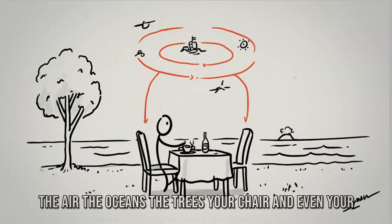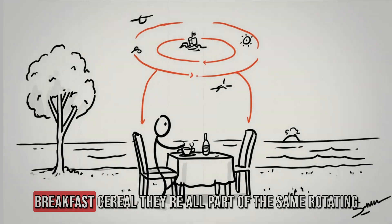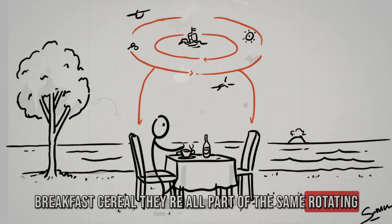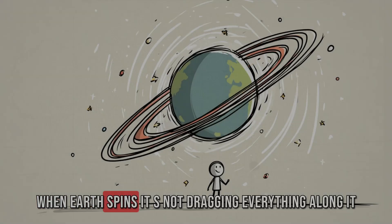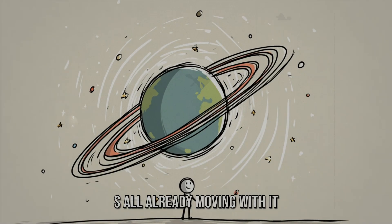It all comes down to the fact that everything is spinning together. The air, the oceans, the trees, your chair, and even your breakfast cereal, they're all part of the same rotating system. When Earth spins, it's not dragging everything along. It's all already moving with it.